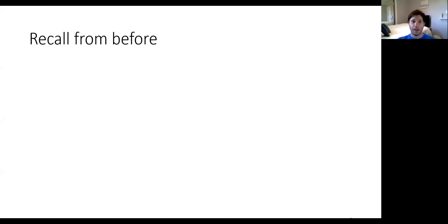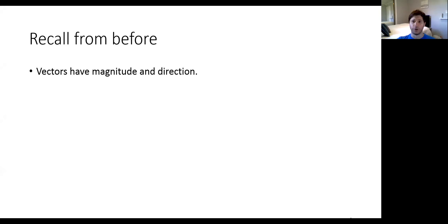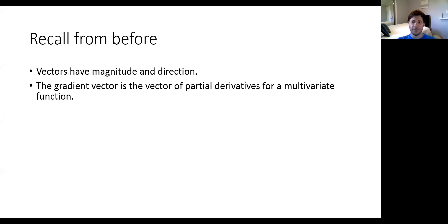First off, the gradient is a type of vector. And like any vector, it has a magnitude and a direction. For our purposes, the direction is really going to be what's most important. The gradient vector itself is the vector of partial derivatives for a multivariate function — a function with more than one independent variable.